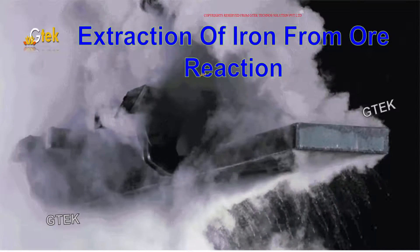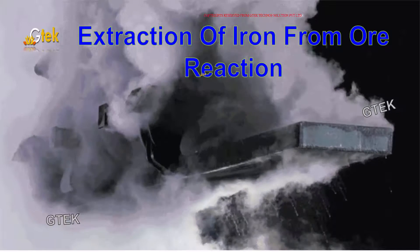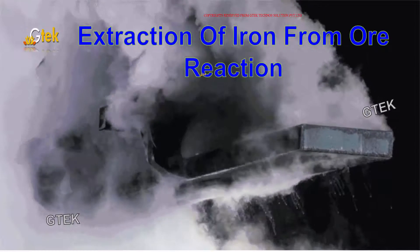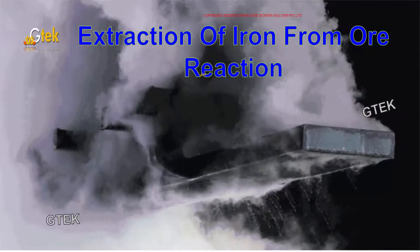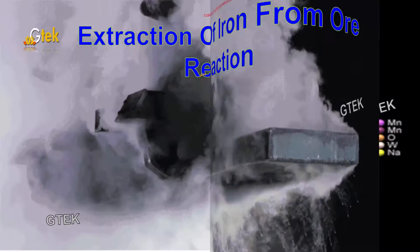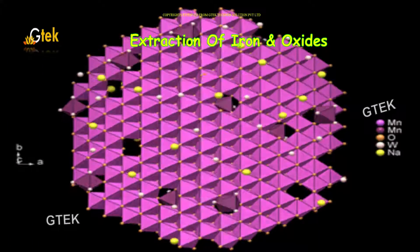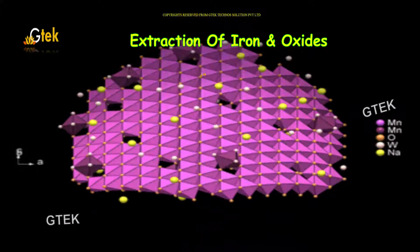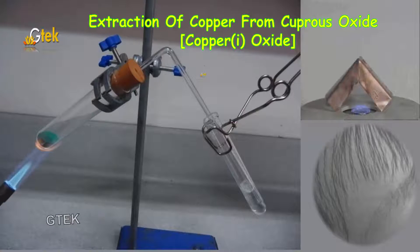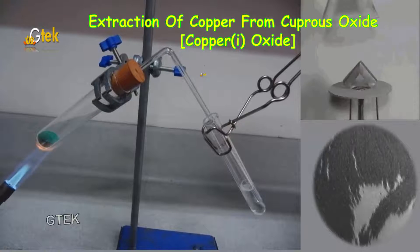This is how the extraction of iron from ore reaction is happening. This is one main area we are going to focus: extraction of iron and oxides, and extraction of copper from cuprous oxide.